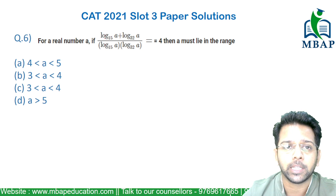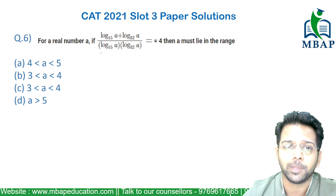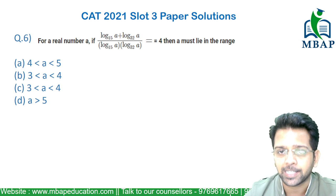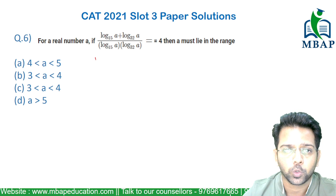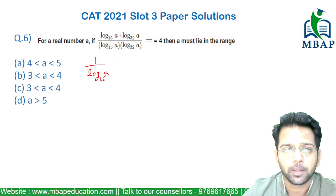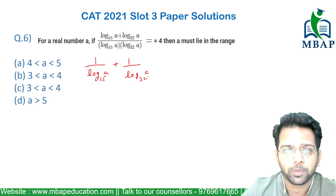Now if you see the numerator and denominator, certainly if you divide both of them on one side, possibly log a to the base 15 will get cancelled. Secondly, you will see log a to the base 32 will get cancelled. So the question directly says it is 1 divided by log a to the base 15 plus 1 divided by log a to the base 32 is equal to 4.